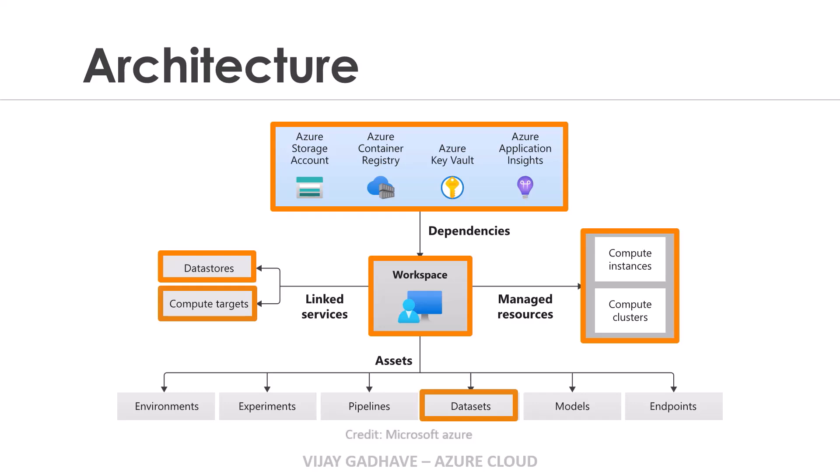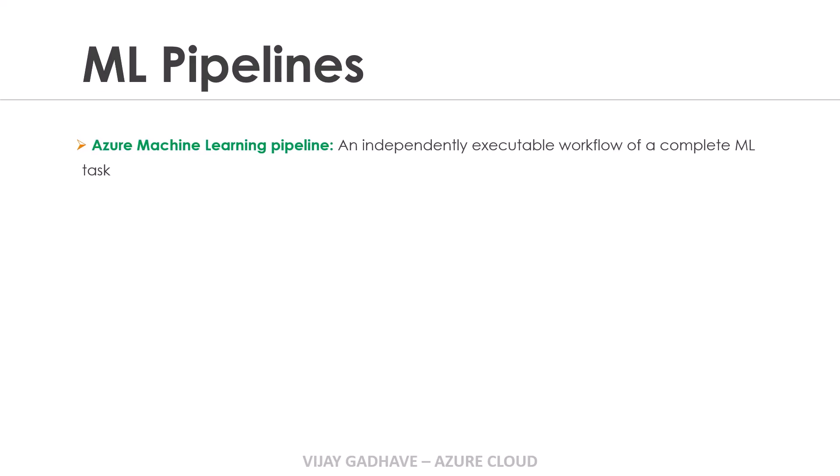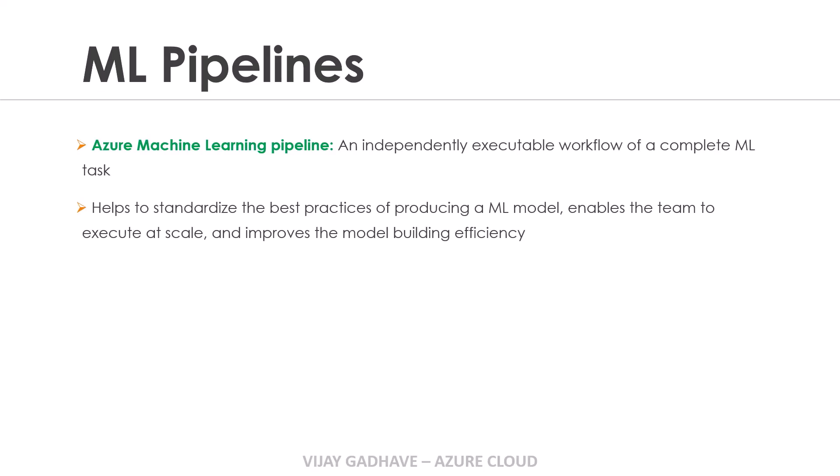Now in this tutorial we will understand about the pipelines. The Azure Machine Learning Pipeline is an independently executable workflow of a complete machine learning task — meaning there are multiple steps in this workflow and we can independently execute each step. The machine learning pipeline helps us to standardize the best practices of producing a machine learning model, enables teams to execute at scale, and improves model building efficiency.